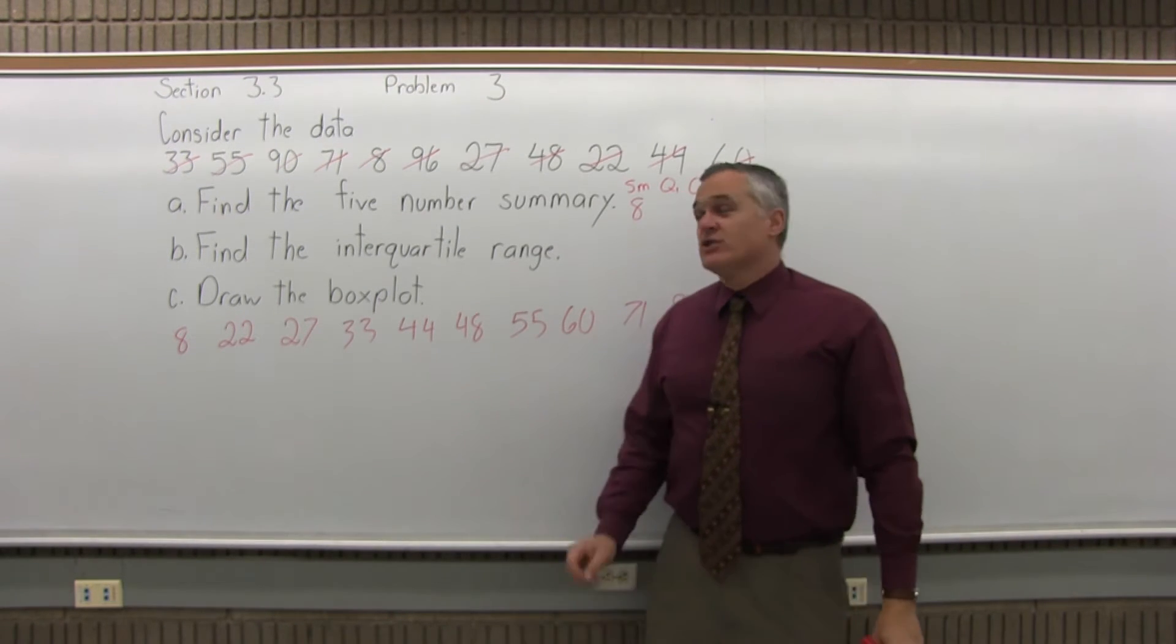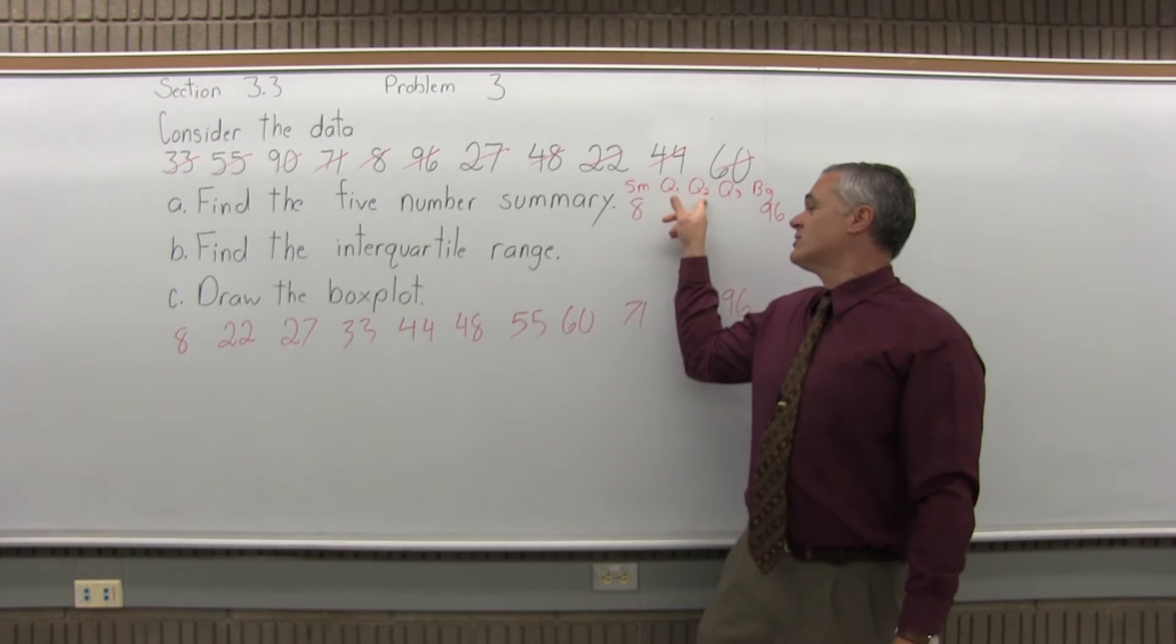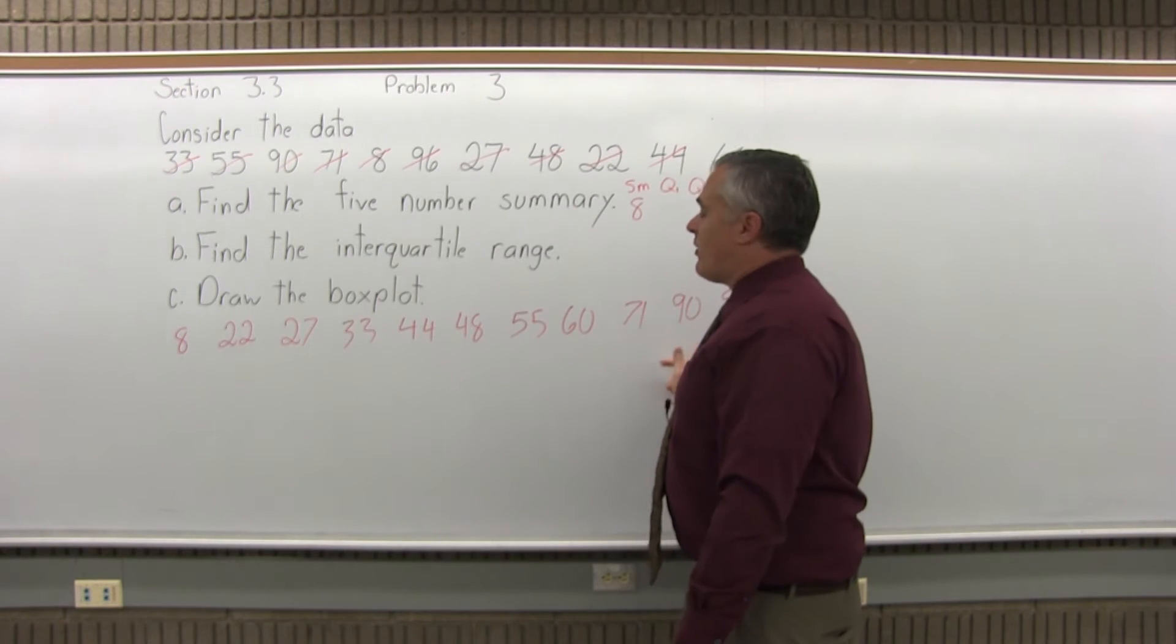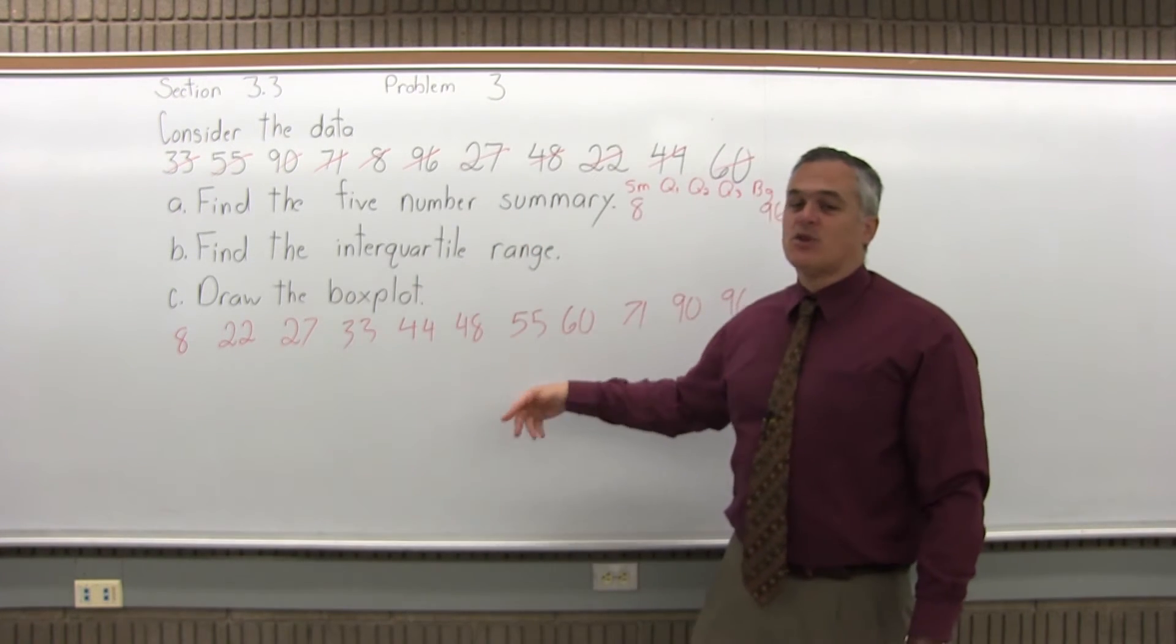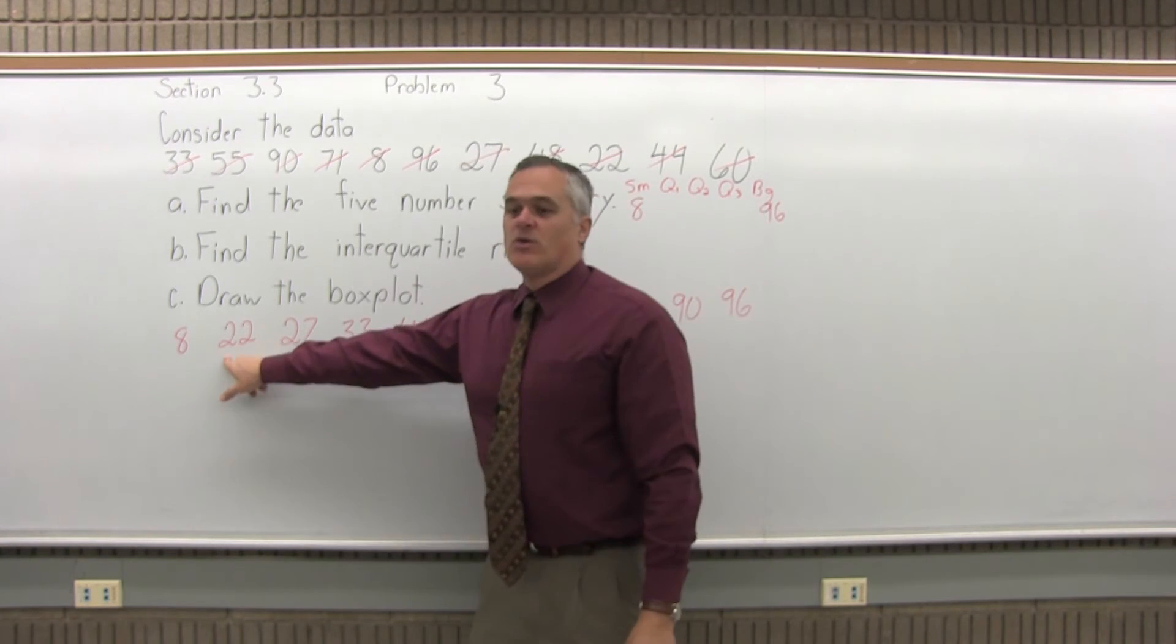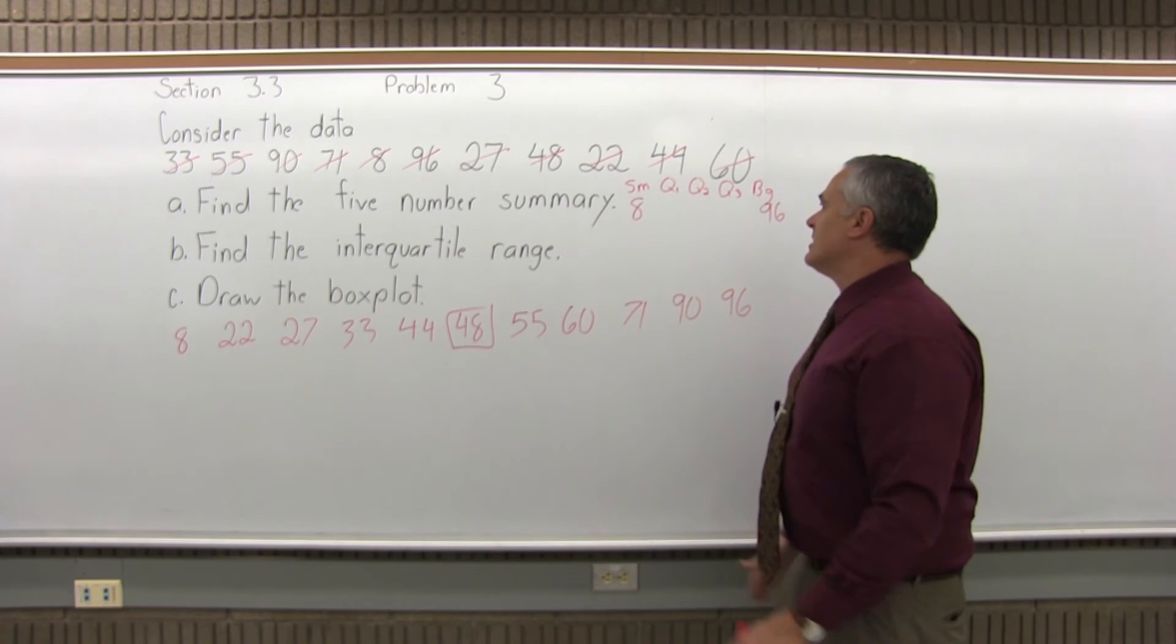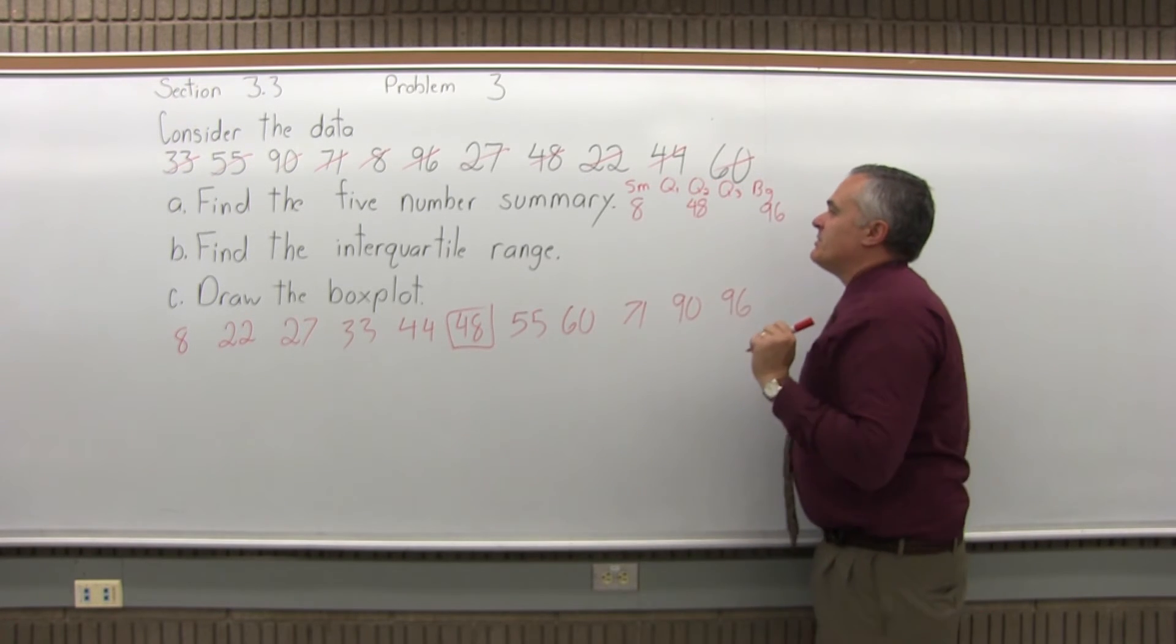Now, for the quartiles, you actually have to find Q2 first. You can't find Q1 first. So Q2 is the median or 50th percentile. Where I have 11 data values, that's an odd amount. There'll be one value right in the middle, which for this problem is 48. There are five values that are smaller and five values that are larger. 48 is right in the middle, which makes it Q2.